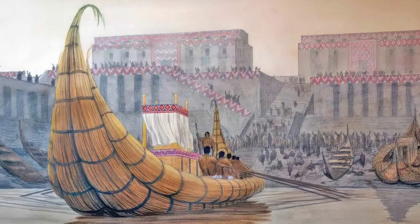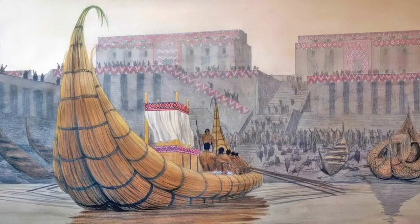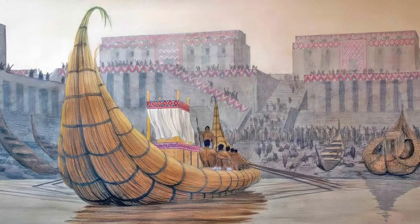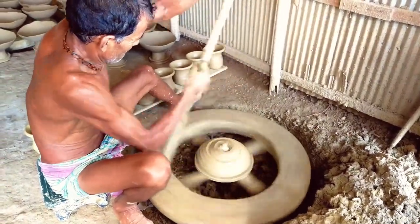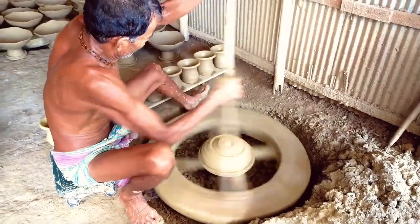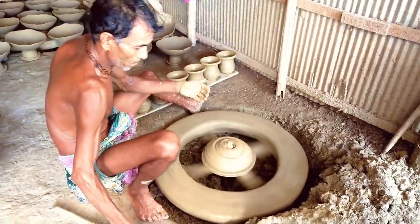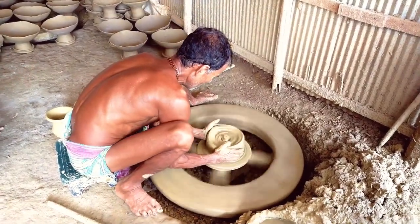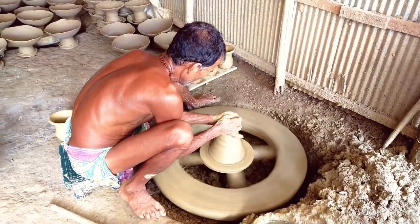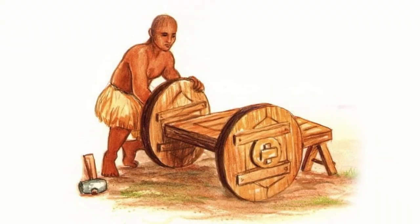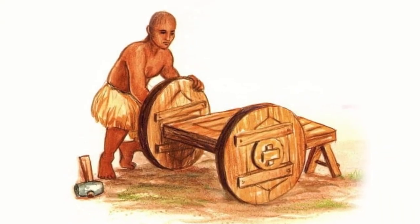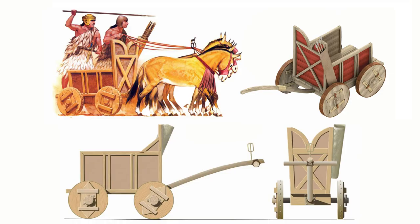During the Ubaid period, Eridu likely covered an area of 10 hectares and housed as many as 4,000 inhabitants. This period also witnessed the invention of the wheel, which was likely first used in pottery making. Artisans would spin a lump of clay on a horizontal plate, balanced on an axle to shape round utensils, employing the same methods that potters still use today. The Sumerians were the first to turn the potter's wheel on its side and adapt it for transportation.